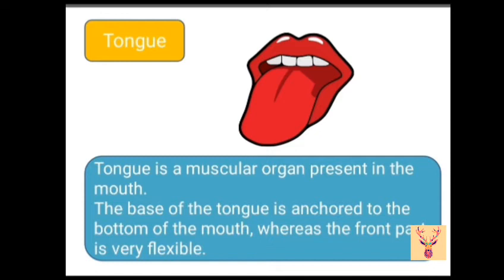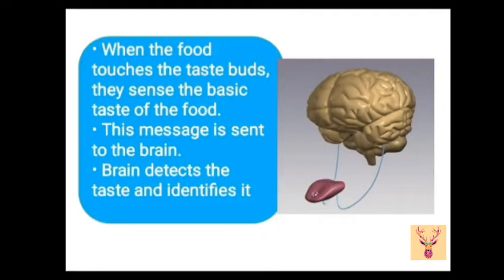Here you can see a picture of tongue. It is a muscular organ present in the mouth. The base of the tongue is anchored to the bottom of the mouth, whereas the front part is very flexible. When the food touches the taste buds, they sense the basic taste of the food. This message is sent to the brain and the brain detects and identifies the taste.